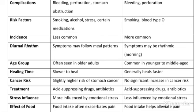Next is treatment — treatment kya karni chahiye. Gastric ulcer ko treat karne ke liye acid-suppressing drugs di ja sakti hain aur antibiotics di ja sakti hain. Aur jo duodenal ulcer hai, us mein bhi acid ko suppress karne ki drugs di ja sakti hain aur antibiotics di ja sakti hain.